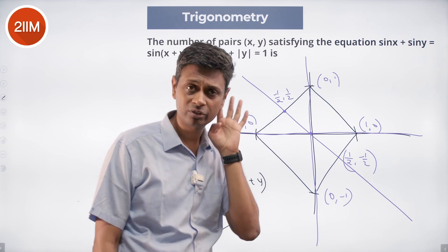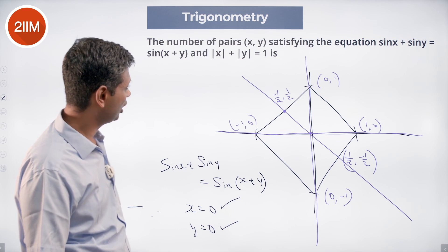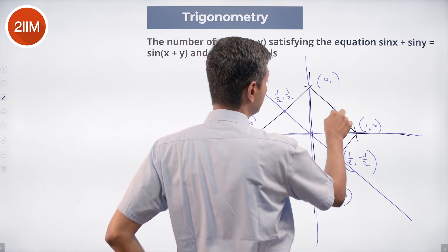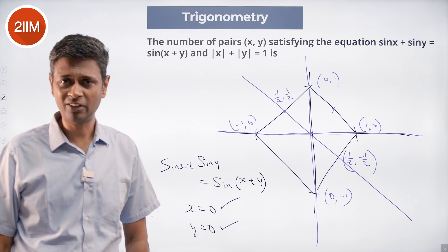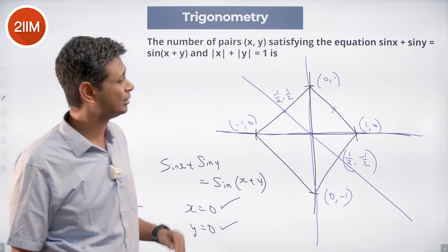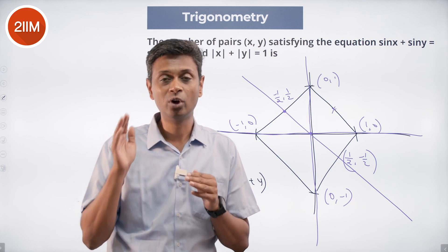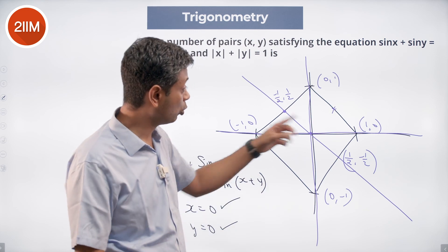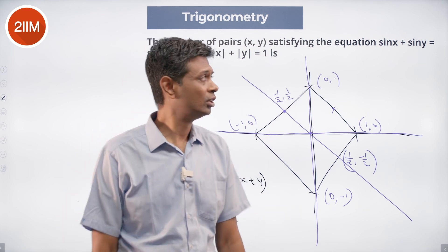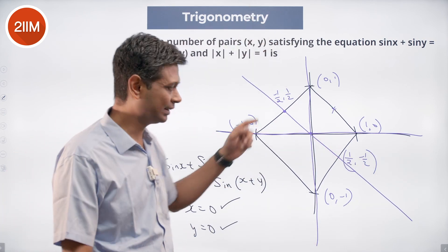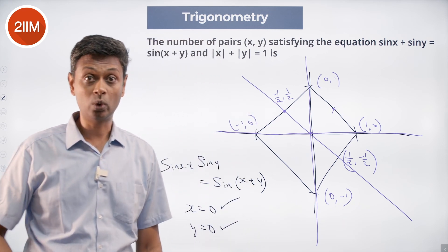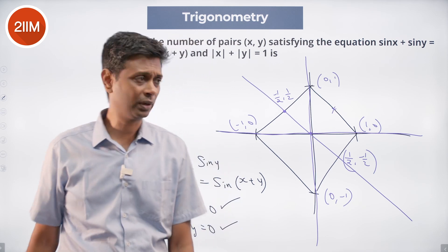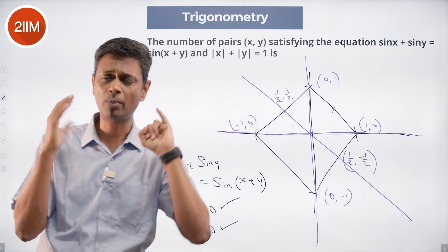So where do these intersect? We have three lines satisfying sine x plus sine y equal to sine of x plus y: the entire y-axis, the entire x-axis, and the line x plus y equal to 0 (y equal to minus x). We verify no other points work — for example, sin(½) plus sin(½) does not equal sin(1). So these three lines intersect mod x plus mod y equal to 1 at exactly six points. Absolutely delightful question.